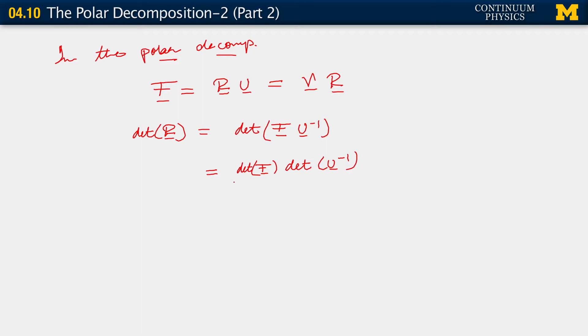Now, we know that the determinant of f is positive. And that comes from the local impenetrability of matter. The determinant of u inverse is equal to 1 over determinant of u.